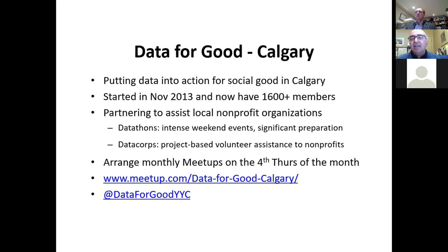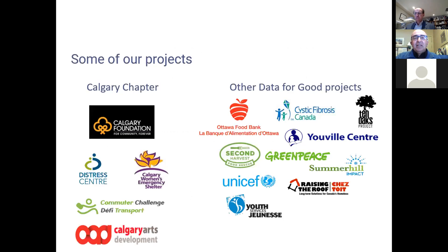This year we're partnered with the Calgary Foundation and looking forward to having that Datathon in the fall of 2020. We also partner with smaller organizations through data core projects, which can run a week or a month. We organize regular meetups, typically on the fourth Thursday of the month. Our Twitter handle is @dataforgoodyyc. We've worked with organizations like the Calgary Foundation, the Distress Centre, Women's Emergency Shelter, Calgary Arts Development, Commuter Challenge, and many more — with over 100 organizations engaged across Canada.